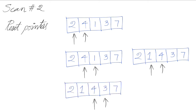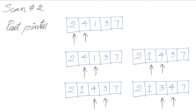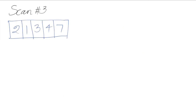We swap four and one, giving us [2, 1, 4, 3, 7]. We move the pointers to the right — four and three are out of order, so we swap them and get [2, 1, 3, 4, 7]. Four is now the second largest element after seven, so it's in the right slot.